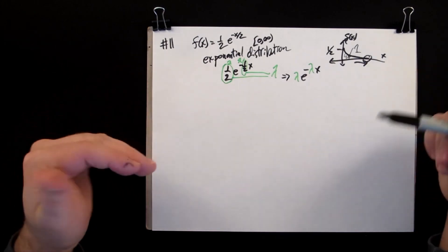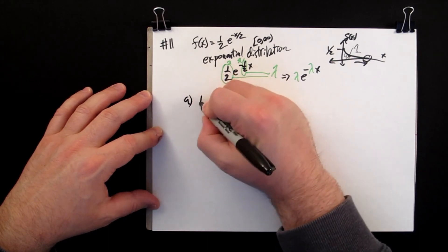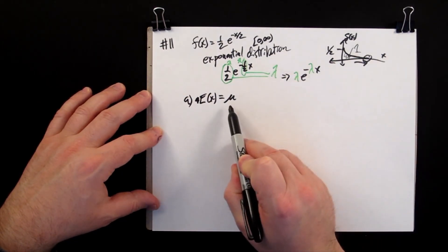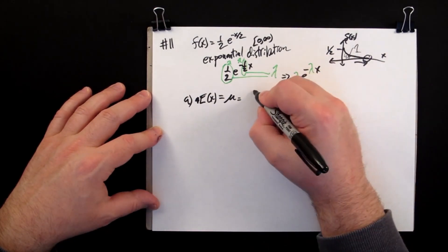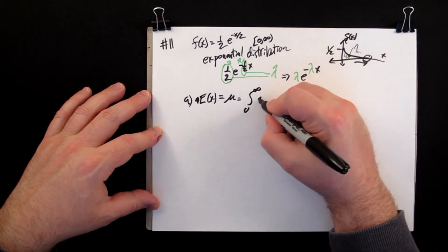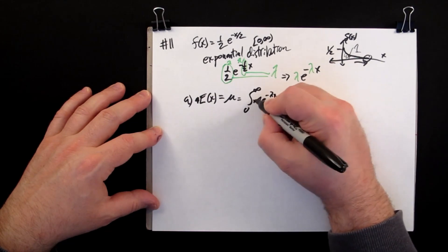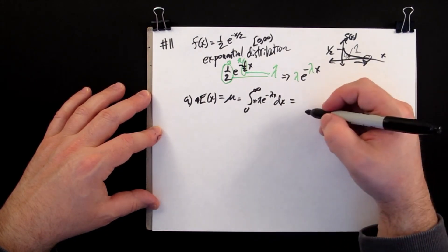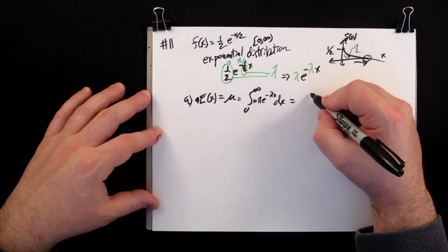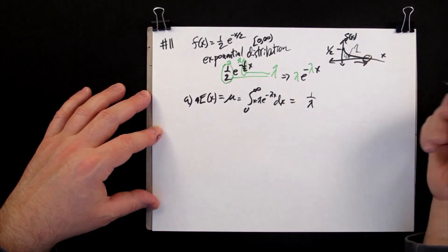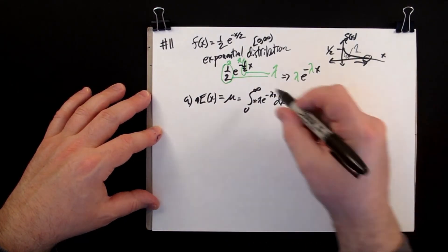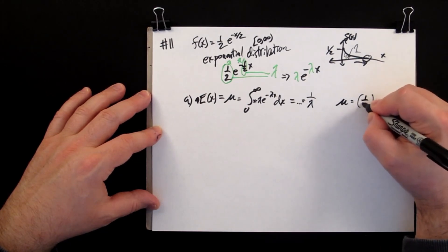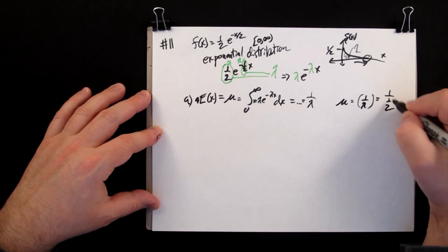The exponential distribution describes the time between arrivals. The first question is: what is the expected value, mu? This is the mean time between arrivals. Setting up the integral — observation times chance of seeing it — and solving with integration by parts, you get that the mean is one over lambda. So for our distribution, where lambda is one-half, the mean is one over one-half, which is two.